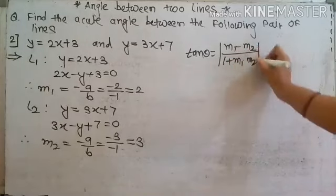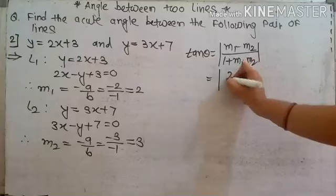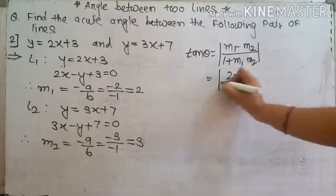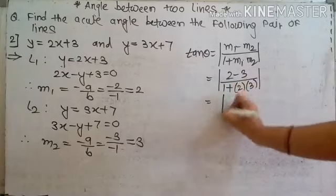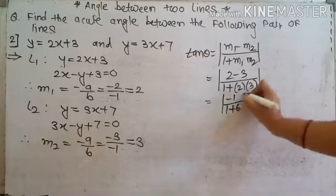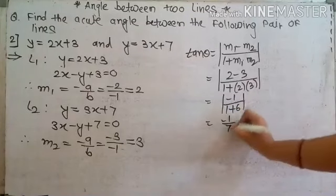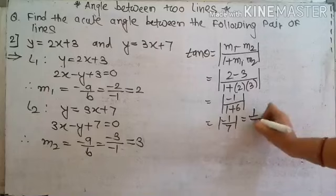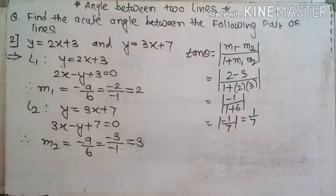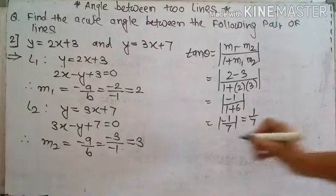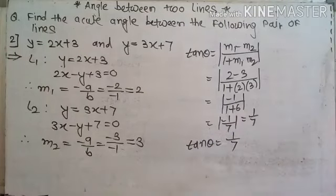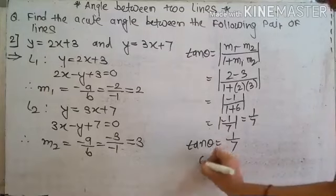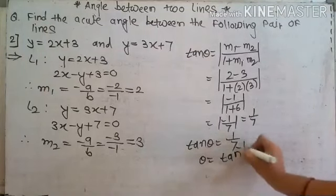Applying the formula: tan theta equals mod of M1 minus M2 upon 1 plus M1 into M2. That equals 2 minus 3 upon 1 plus 2 into 3, which is minus 1 upon 7. Taking the mod, tan theta equals 1 by 7. Since this is not a standard angle value, we write theta equals tan inverse of 1 by 7.